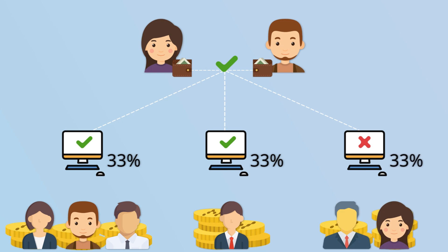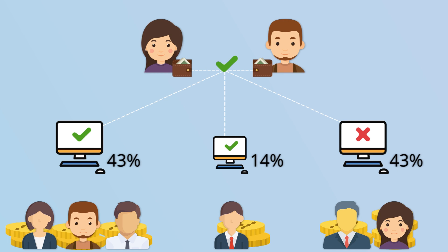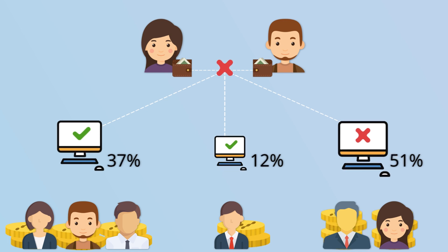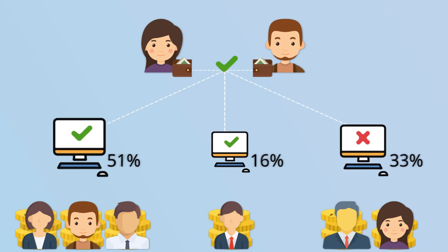But all nodes are not equal — they have a weight. The weight is the sum of all Nanos from wallets that use the node as their representative. This is called proof of stake.